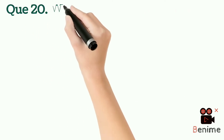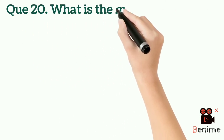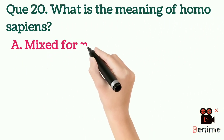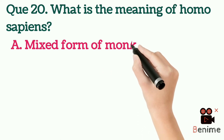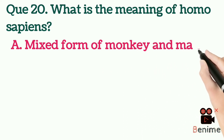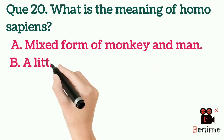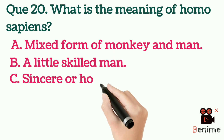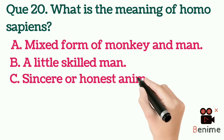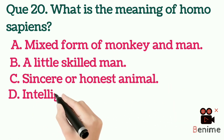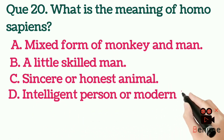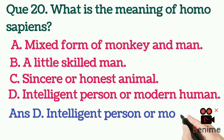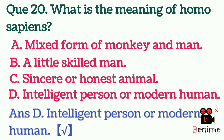Question 20: What is the meaning of Homo sapiens? A. Mixed form of monkey and man. B. A little skilled man. C. Sincere or honest animal. D. Intelligent person or modern human. Answer D: Intelligent person or modern human.